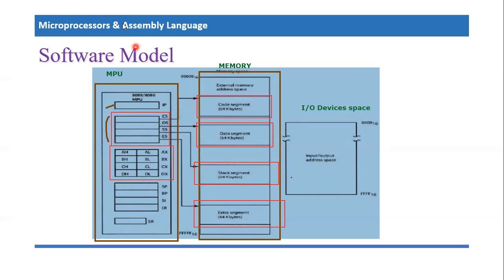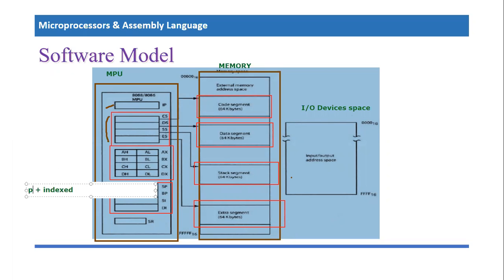After the data registers, we have some other important registers we will be covering soon. Two of them are pointer registers and two are index registers. If you closely look at the picture, SP and BP — stack pointer and base pointer — are the two pointer registers. The lower two registers, SI and DI — source index and destination index — are the index registers. These are important registers accessible to the programmer, which is why they are included in the software model.